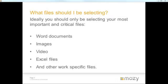What files should I be selecting? Ideally, you should be selecting your most important and critical files — things like Word documents, images, video, Excel files, depending on your particular type of work. For example, with an accountancy firm or a financial firm, maybe Excel files and software they use like QuickBooks might be the most important things to backup. Selecting only what matters also reduces the amount of quota you're using and reduces your cost.